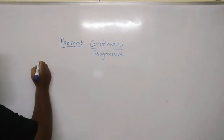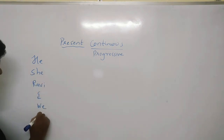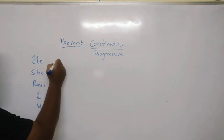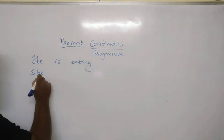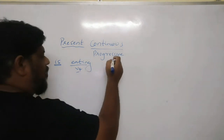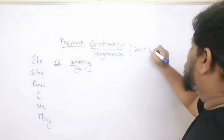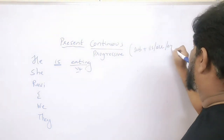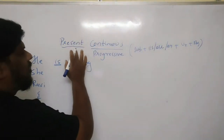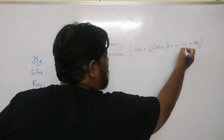In the present continuous tense we take the same subjects: he, she, Ravi, I, we, they. When you write with 'he,' the sentence is: 'He is eating.' The helping verb used here is 'is,' and the verb form is V4. The formula is: subject plus is/are/am plus V4 plus object. So 'he is eating' — here 'is' is the auxiliary verb and 'eating' is V4.